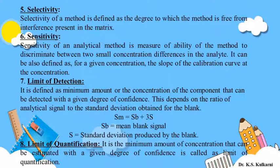The formula for limit of detection is: SM = SB + 3S, where SB is the mean blank signal. Before starting your experiment you run the simple solvent you are using, and the instrumental response you get for that solvent is called the mean blank signal. S is the standard deviation for the procedure. So SM gives you the limit of detection, which equals the mean blank signal plus 3 times the standard deviation.